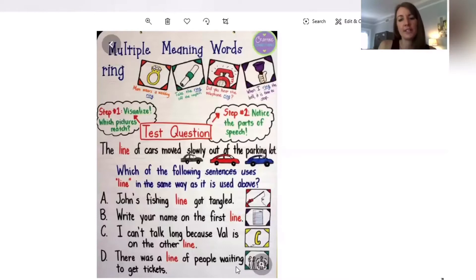Last but not least, so far we have not found one that means in a row. Let's try D: There was a line of people waiting to get tickets. I'm visualizing a bunch of people all standing in a row.